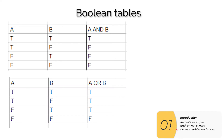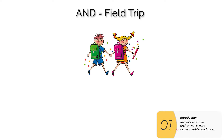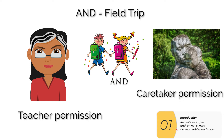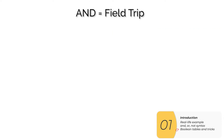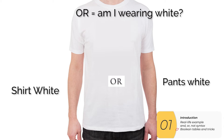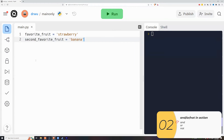Sometimes you'll see boolean truth tables showing how they combine. If you're taking the AP exam you'll need to know these, but I recommend using real-world examples instead. For `and`, the field trip example works well — you need permission from the teacher and permission from the caretaker; if one is false, there's no field trip. For `or`, think about 'am I wearing white' — if my pants are white or my shirt is white, only one needs to be true for the whole thing to be true.